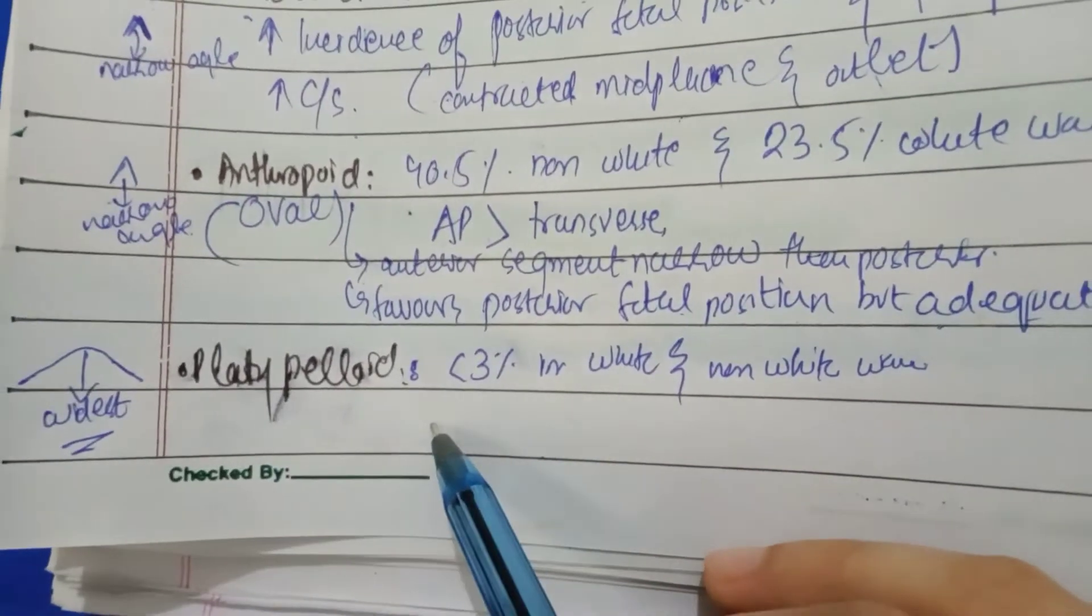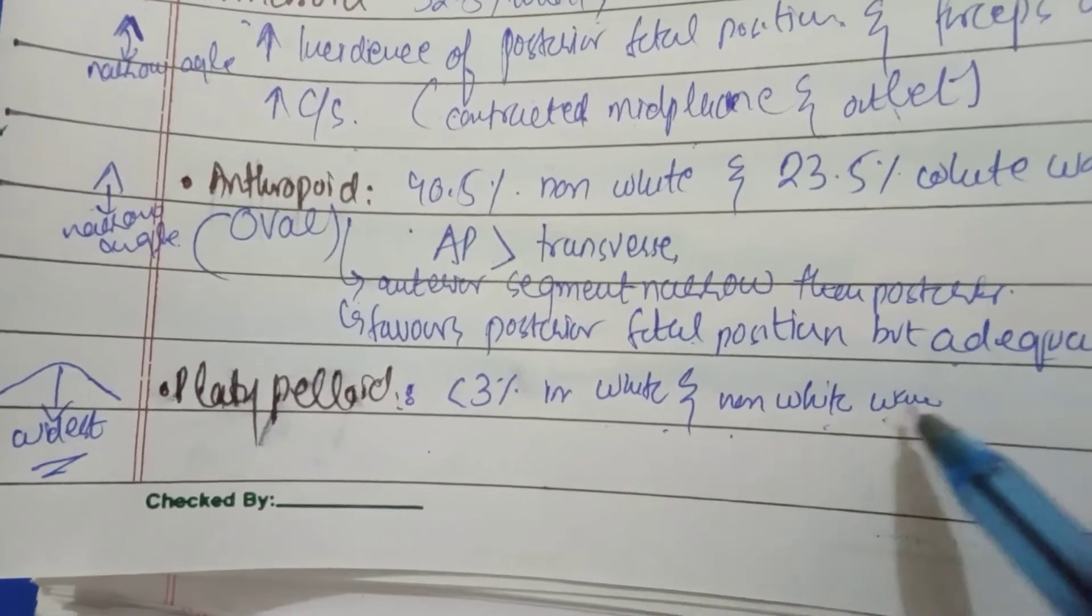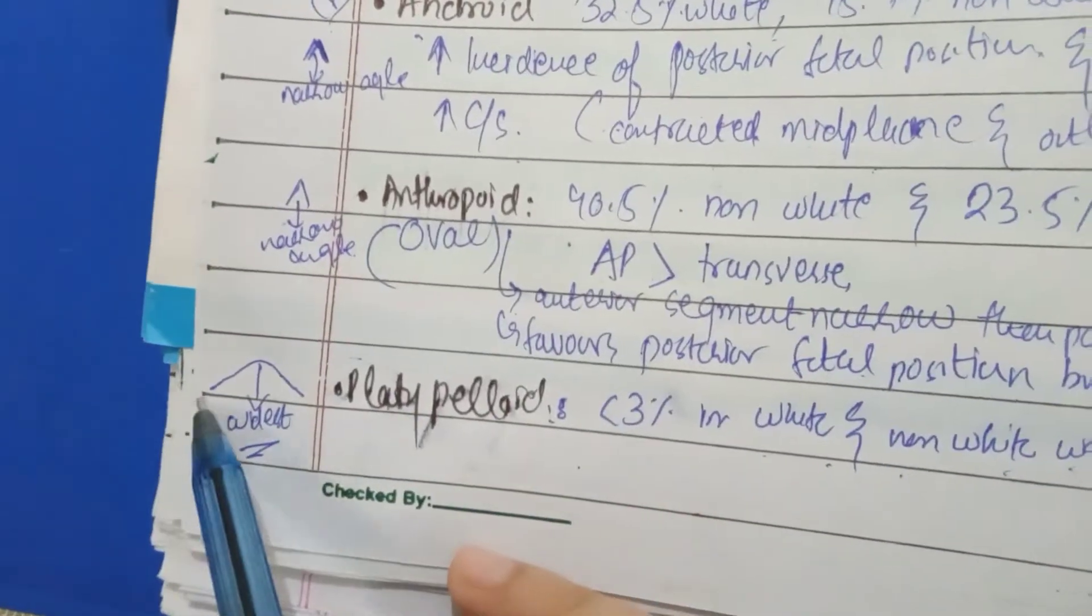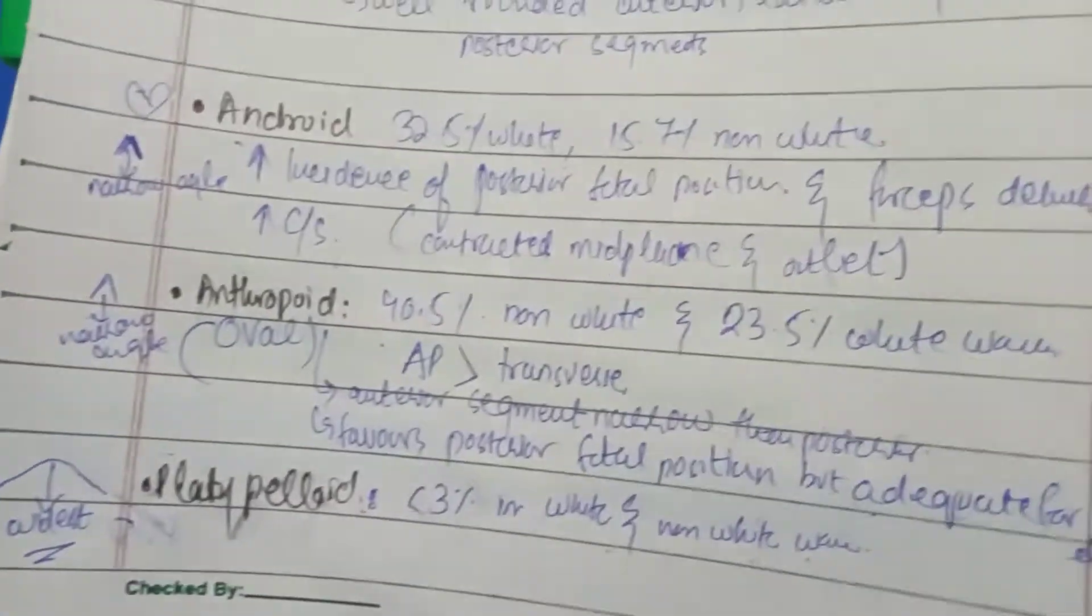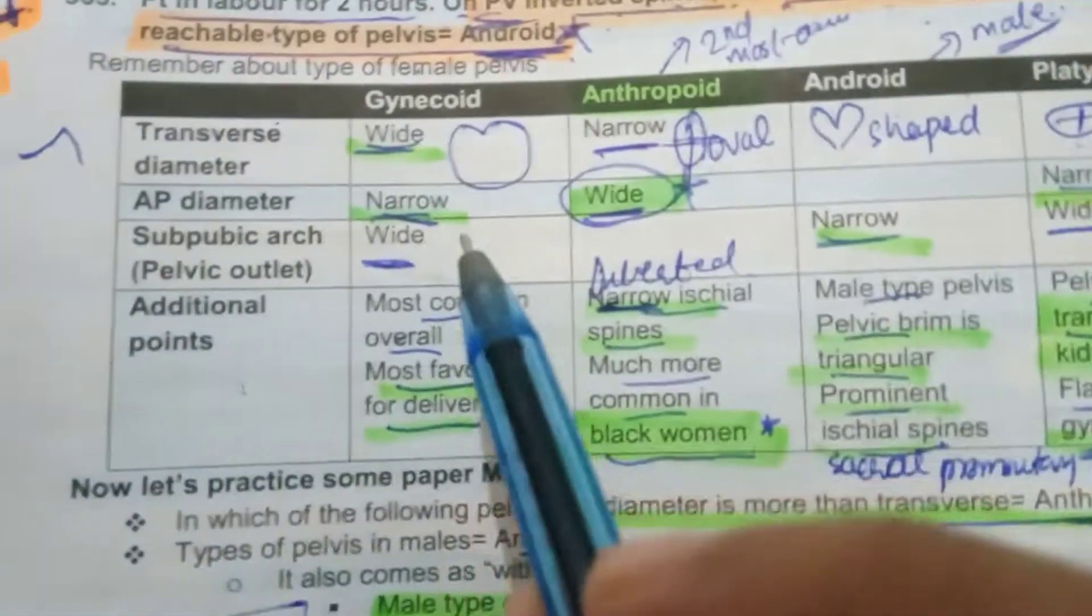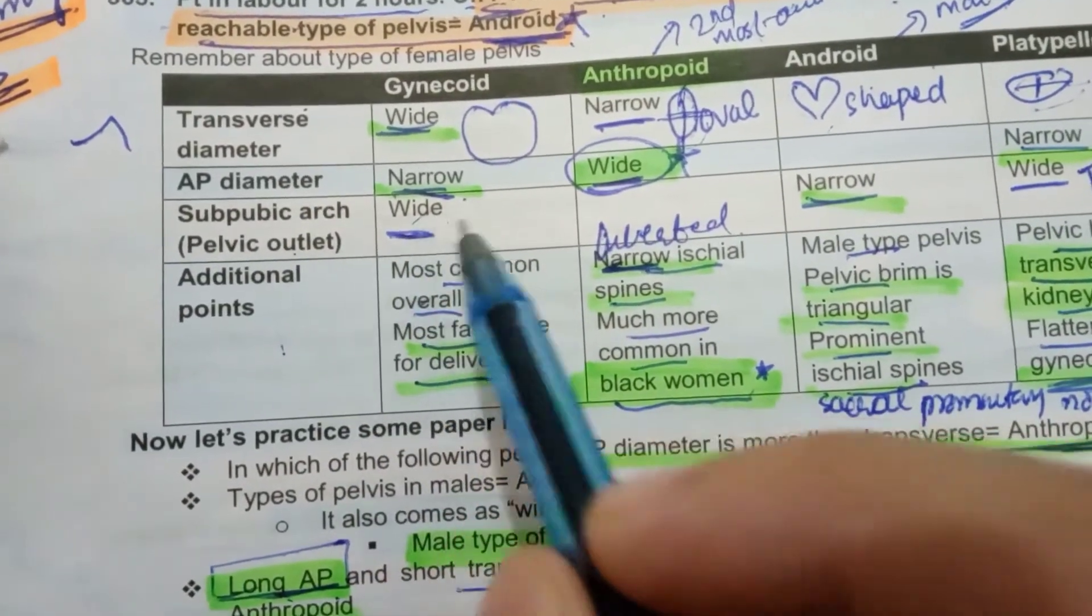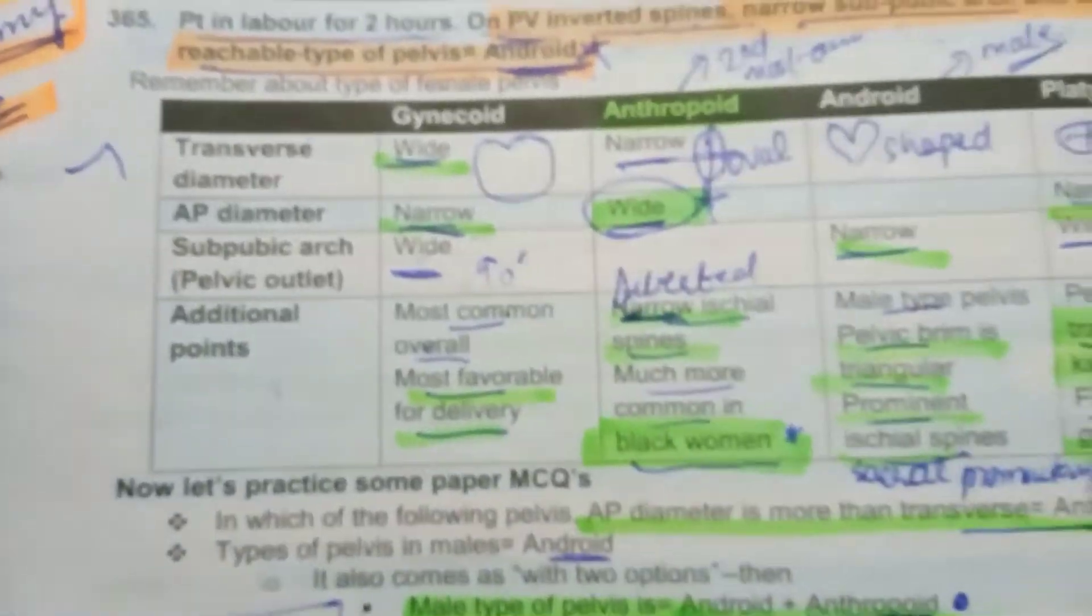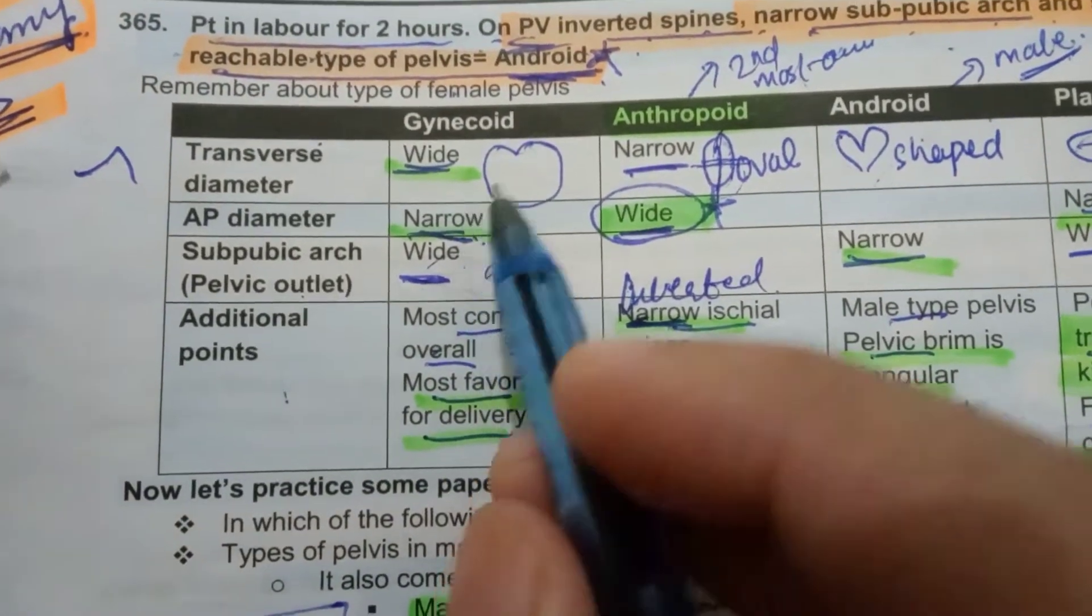Platypelloid is a rare type of pelvis - less than 3% in white and non-white combined. But the pubic arch is the widest. We can see from here more than 90 degree angle. AP diameter is narrow and the pubic arch is wide, that is 90 degrees. And AP diameter is narrow than transverse. That is what they mean.